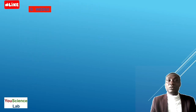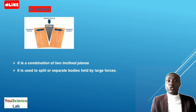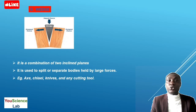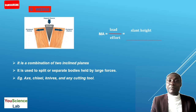Next is the wedge. Here is a diagram of a wedge used to split a hard object into two parts. It is a combination of two inclined planes and is used to split or separate bodies held by large forces. Examples include axes, chisels, knives, and any other tool used for cutting. The mechanical advantage equals the load divided by the effort, which equals the slant height divided by the width or thickness of the wedge.